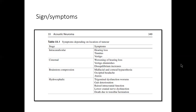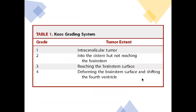These severe symptoms are very rare. Based on tumor growth, the Koos grading system is most widely used. Grade 1 is an intracanalicular tumor. Grade 2 extends into the cistern but does not reach the brainstem. Grade 3 reaches the brainstem surface. Grade 4 deforms the brainstem surface and shifts the fourth ventricle.